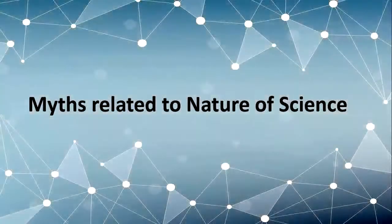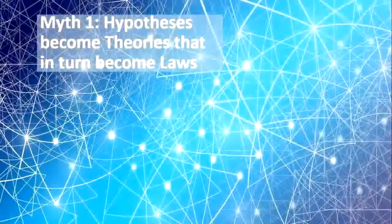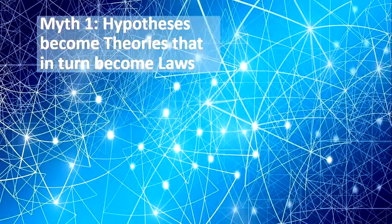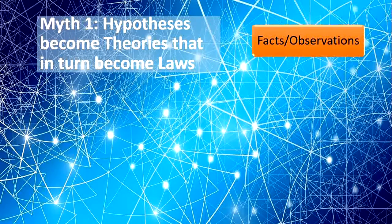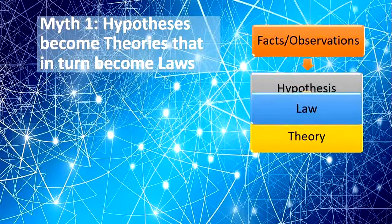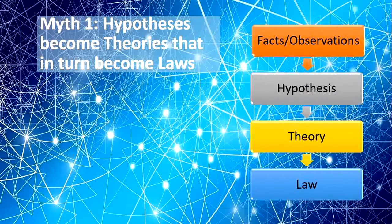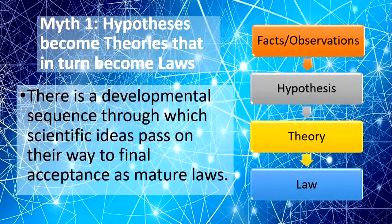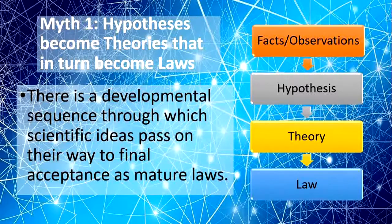The first in the list is: hypothesis become theories that in turn become laws. This myth basically explains that if there are certain facts or observations by different scientists, they frame certain hypotheses to test those facts, then they develop certain theories, and when they test theories, ultimately the verified theories become laws. It seems like science is a hierarchical process. McComas wrote that there is a developmental sequence through which scientific ideas pass on their way to final acceptance as mature laws — this is the statement which is the basic reason behind this myth.